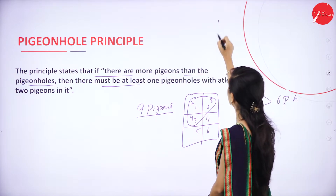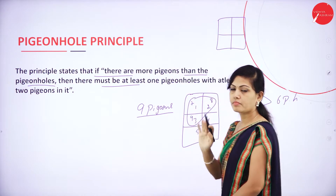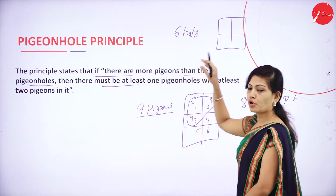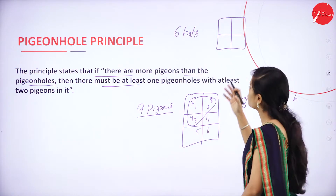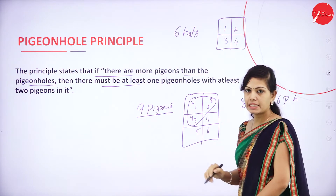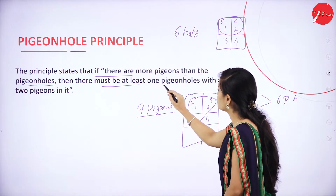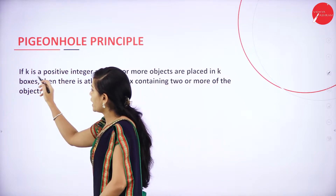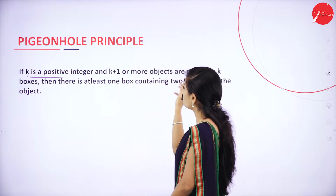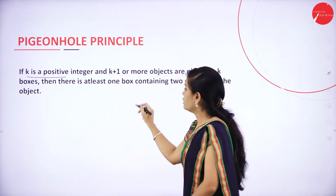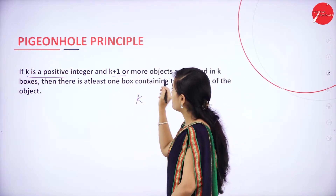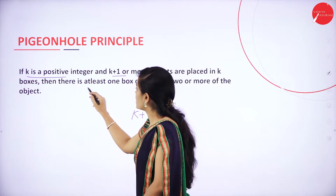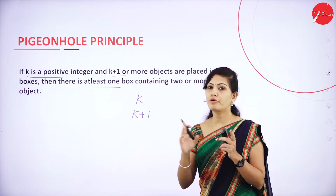One more example: I have 4 pigeon holes, 4 boxes, and I have to accommodate 6 hats into these 4 boxes. I can accommodate 1, 2, 3, 4 hats easily, then the remaining means at least 1 pigeon hole contains at least 2 pigeons in it. If k is a positive integer and k plus 1 or more objects are placed in k boxes, then there is at least 1 box containing 2 or more of the objects. So this point you have to write in the exam.